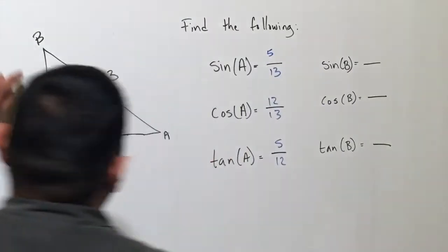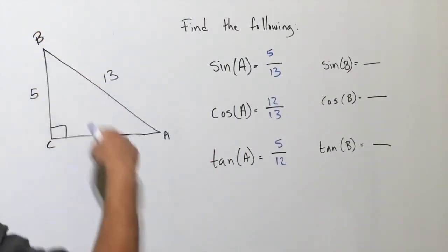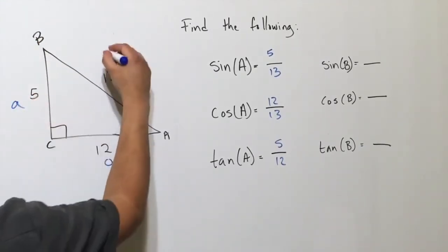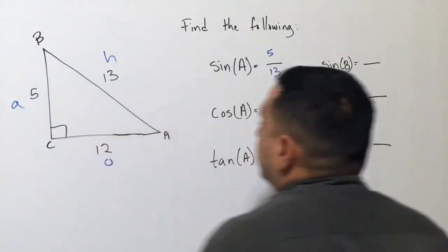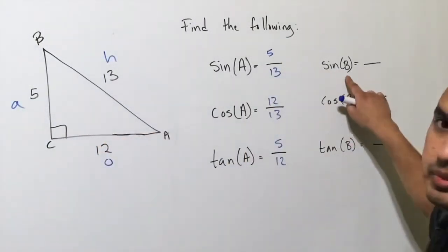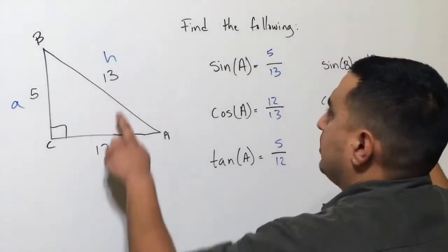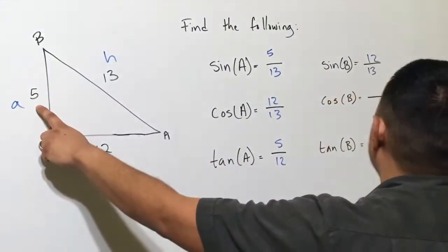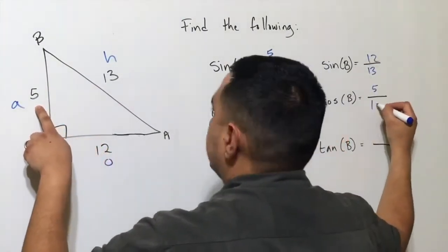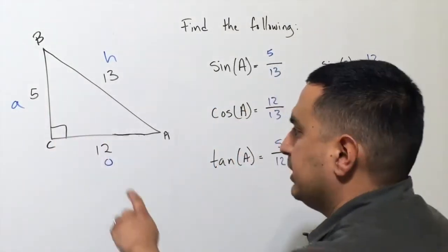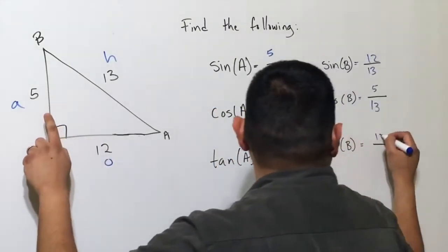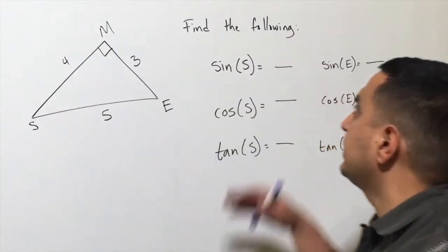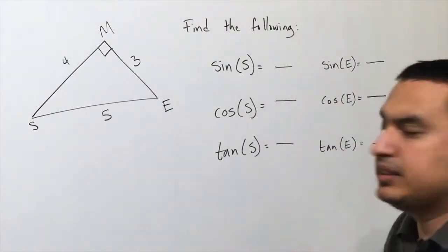Now looking at angle B: from angle B, the opposite side is 12, the adjacent is 5, and the hypotenuse is 13. So sine of B is 12/13 (opposite over hypotenuse), cosine of B is 5/13 (adjacent over hypotenuse), and tangent of B is 12/5 (opposite over adjacent).